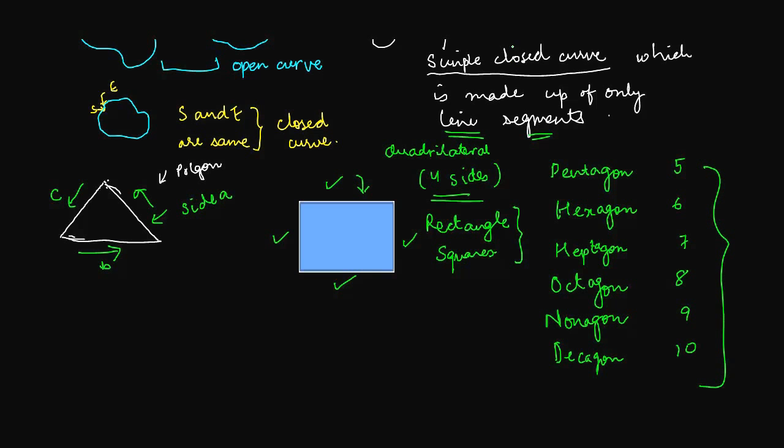So basically a polygon is a simply closed curve made up only of sides. You don't have curves like this in a polygon. It has to be a straight line.